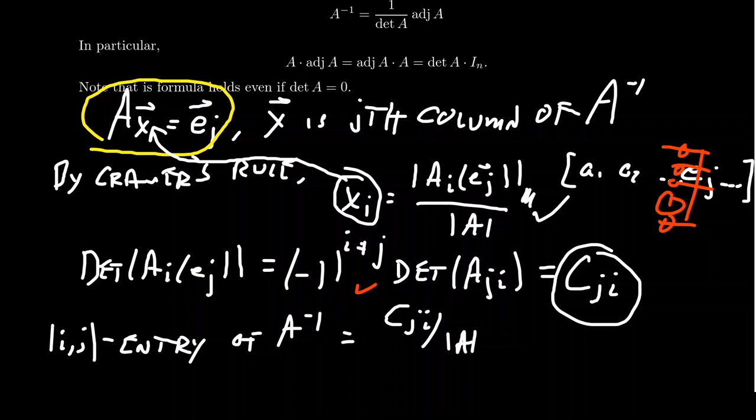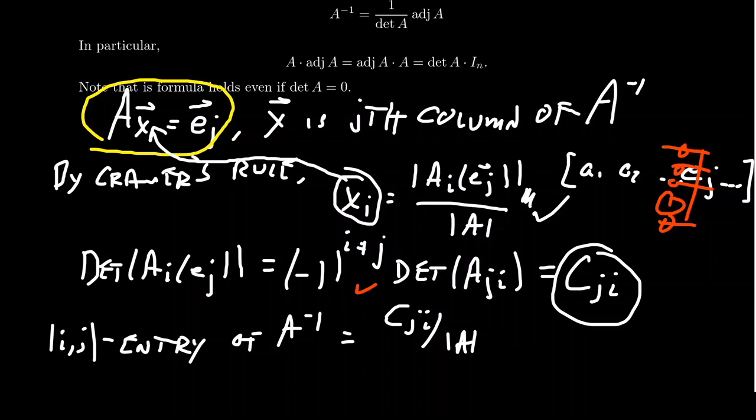So using Kramer's rule, we're able to compute a formula for the inverse of the matrix, one we've already been using. For 2x2s, it's not so bad. I want to show you how this would work for 3x3s. This one's a little bit more involved, so I have a lot of the details already presented to you on the screen.